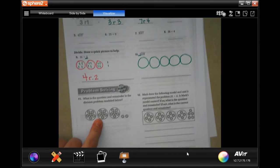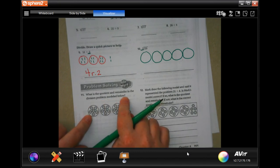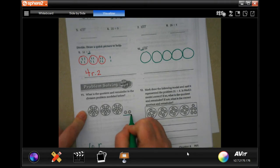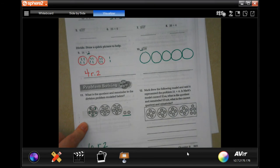Okay, you can also do this. It just says what's the quotient and the remainder of the division problem model below? Well, one, two, three, four, five, six remainder two. It's just how many are in one circle.